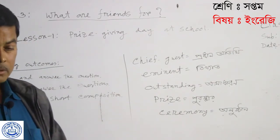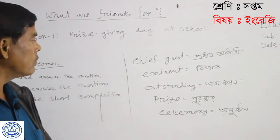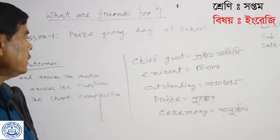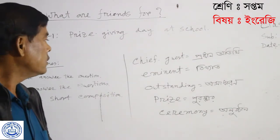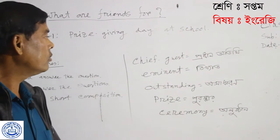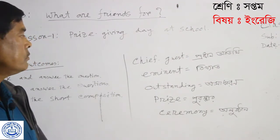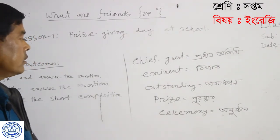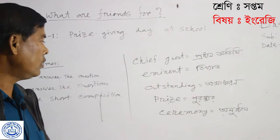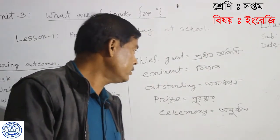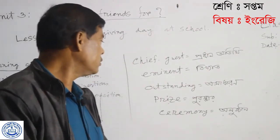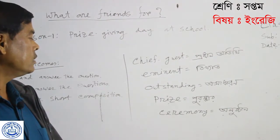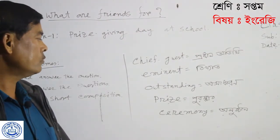Before the lesson, we have some word meanings. Chief Guest means Pratana Otiti. Eminent means Vikhatwa. Outstanding means Asadaran. Prize means Purushkar. Ceremony means Unasthan.